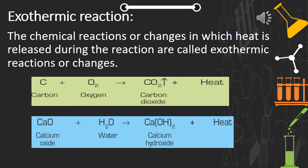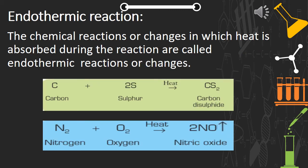Exothermic reactions are chemical reactions or changes in which heat is released, given out, or liberated during the reaction. When carbon is heated in air, carbon dioxide is formed and heat energy is released — this is an exothermic reaction. The second example is when water is added to calcium oxide; a new substance — calcium hydroxide — is formed with the release of heat energy.